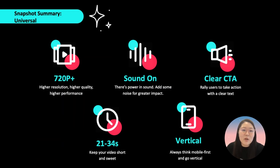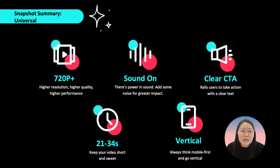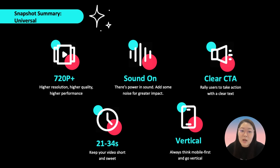Here is a quick summary of the universal creative elements. All you need to remember are these five universal tips: use a minimum of 720 pixel resolution, embrace the power of sound, have a clear CTA within the creative, keep your videos short and sweet between 21 to 34 seconds, and have your creative in a vertical 9 by 16 format to maximize the device screen.